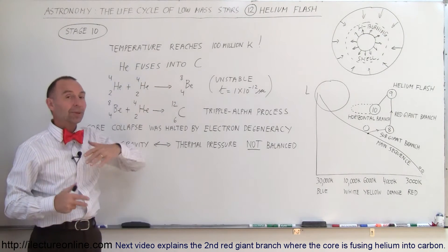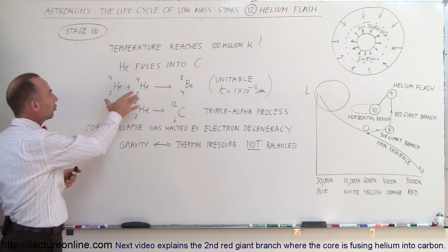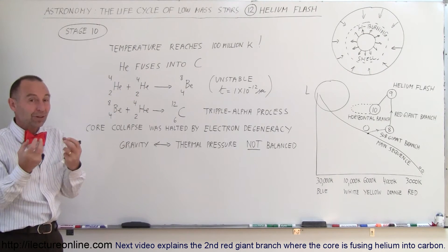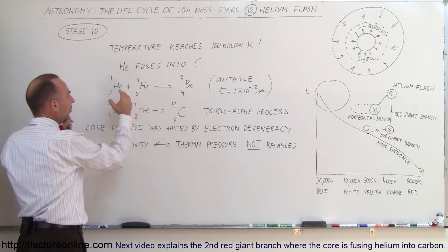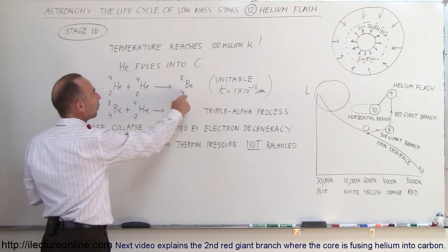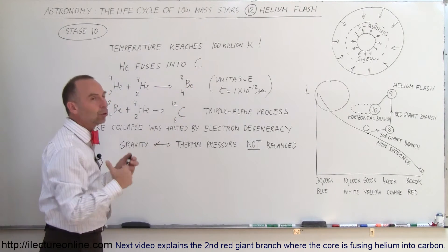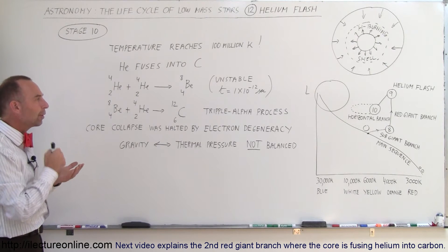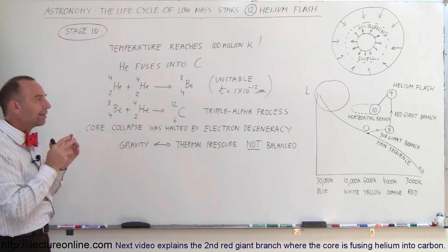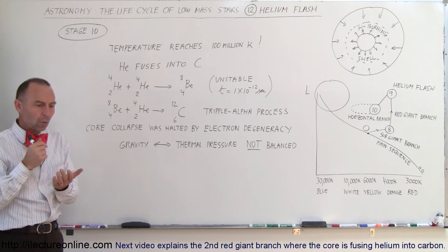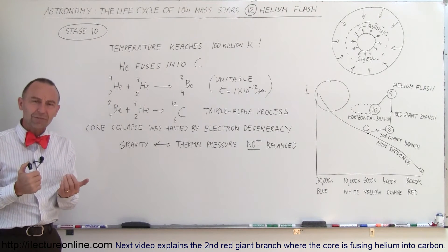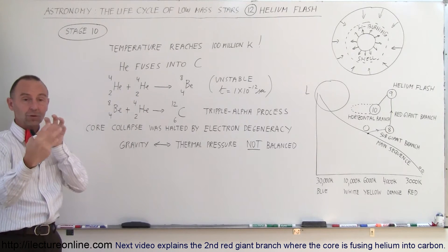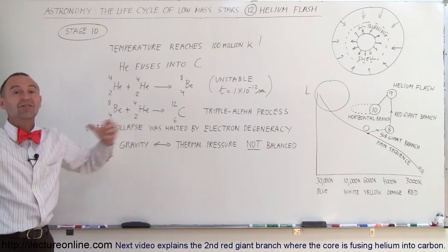Helium will begin to fuse into carbon in a two-step process. First, two helium nuclei come together — at that point the electrons are stripped away, so they're simply the nuclei of atoms. They collide and form beryllium with four protons and four neutrons — eight nuclear particles total. But that's a very unstable state for beryllium. It will only exist for 1×10⁻¹² seconds — one trillionth of a second — an incredibly short time, and then it will disintegrate.